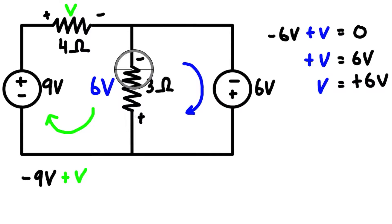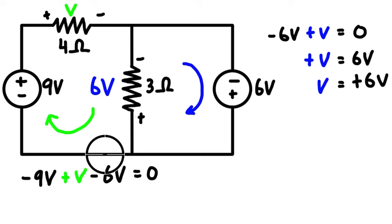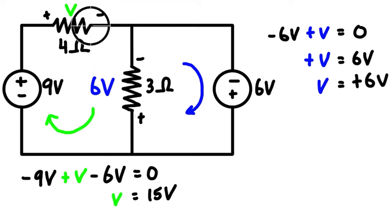Then we come into the negative terminal of the six-volt resistor, so we put that in as negative six volts in our expression, and it all sums to zero since we return to our starting point. Bringing the nine and the six to the other side, we find that V equals 15 volts — indicating the negative side of the resistor is 15 volts less than the positive side. We determined that with Kirchhoff's voltage law.